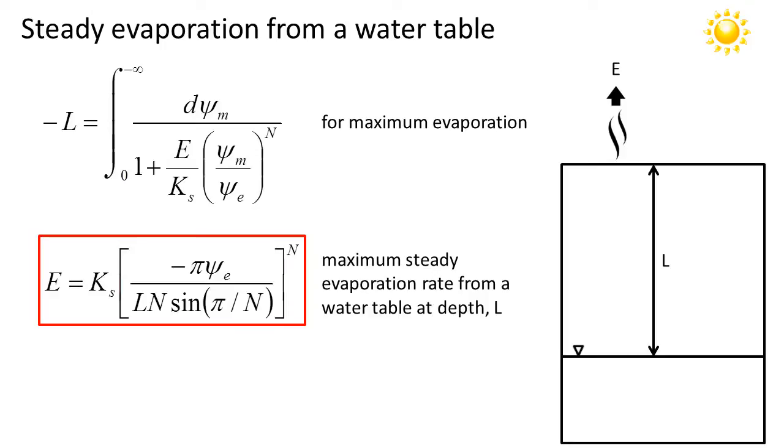When we evaluate that integral, we find that the evaporation rate E is equal to the saturated hydraulic conductivity multiplied by this term, which is raised to the exponent N. The term in brackets includes the air entry potential in the numerator. And in the denominator, it includes the L, the depth of the water table, N, which is the exponent calculated from the Campbell model, and a sine term. And the argument of the sine term is π/N, where N again comes from the Campbell function.